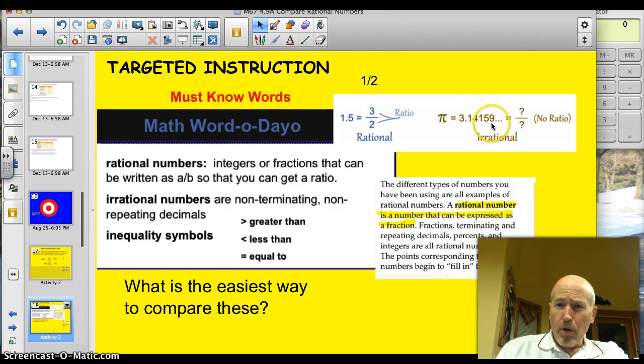Pi, which is 3.14159, blah, blah, blah, blah. It goes on forever. You can't write a ratio because it doesn't terminate. It just keeps going on and on. It doesn't terminate or repeat. So, it's an irrational number.